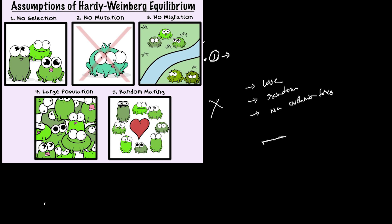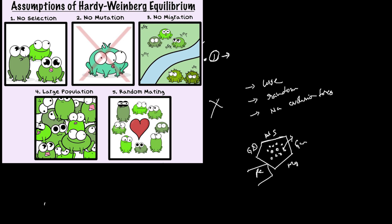In contrast, evolutionary forces include: large population dynamics, natural selection, genetic drift, recombination, gene migration, and gene flow. A population is reproduced through reproduction, and there are many gene recombination events and migrations that can occur.